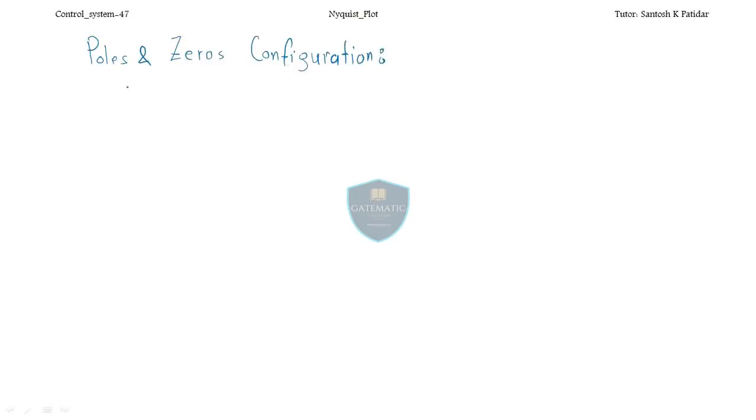That's why it's confusing among students. Today I'll set the relationship between the open-loop transfer function and the closed-loop transfer function inside the Nyquist plot. Then we'll switch to problems. Let me start — we'll see the pole and zero configuration first. Remember, from root locus onwards — root locus, Bode plot, polar plot, Nyquist plot — all these are based on the open-loop transfer function.